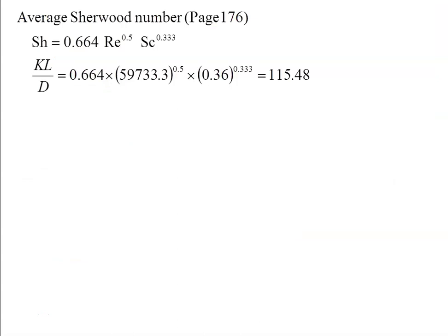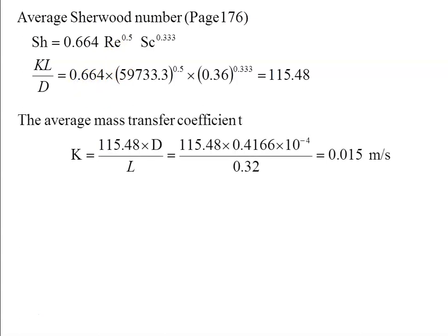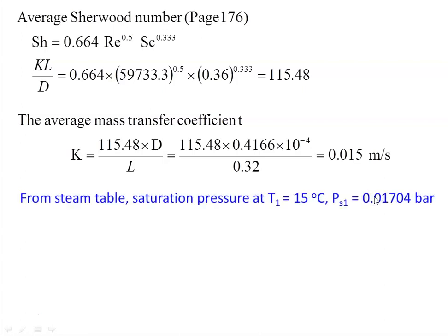Average Sherwood number for laminar flow from page 176: Sh = 0.664 × Re⁰·⁵ × Sc⁰·³³³. Substituting: kL/D = 0.664 × (59733.3)⁰·⁵ × (0.36)⁰·³³³ = 115.48. Mass transfer coefficient k = 115.48 × D/L = 0.015 m/s. From steam tables at 50°C (water surface temperature), saturation pressure = 0.0170 bar.